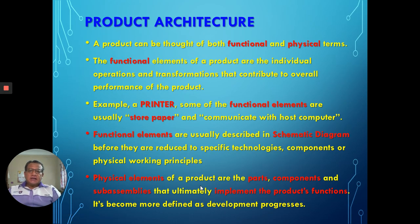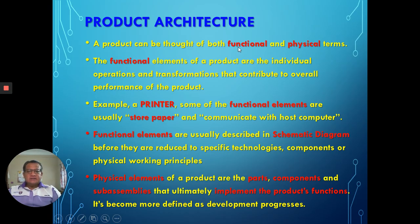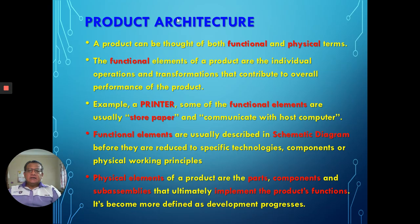What is actually product architecture? Product architecture constitutes of two main components: the functional category and the physical category. The functional elements are the individual operations that contribute to overall performance — the real functions needed by the product. For example, a printer's function is printing.